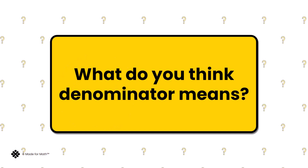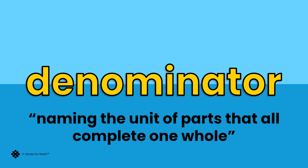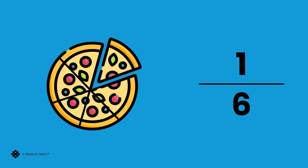What do you think denominator means? Denominator means to name fraction parts completely, or naming the unit parts that all complete one whole. The denominator is the number underneath the fraction line. It tells us the name of the whole with its fraction parts.